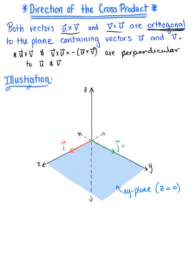The unit vector j hat has components (0, 1, 0) and i hat has components (1, 0, 0). These two standard unit vectors lie in the xy plane, which tells us their cross product will be perpendicular to the xy plane, pointing in the positive z direction. So the cross product of i hat and j hat equals k hat, with components (0, 0, 1) — perpendicular to both the xy plane and to vectors i and j.